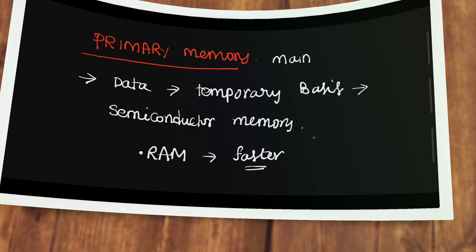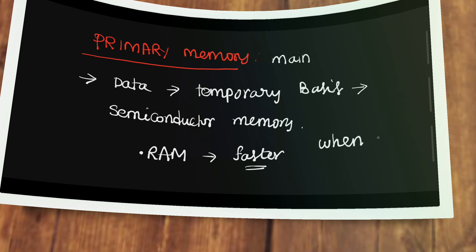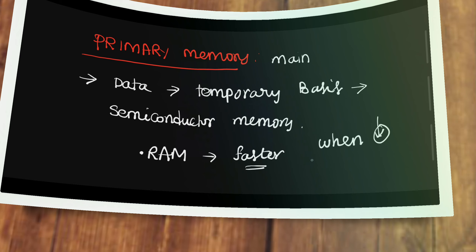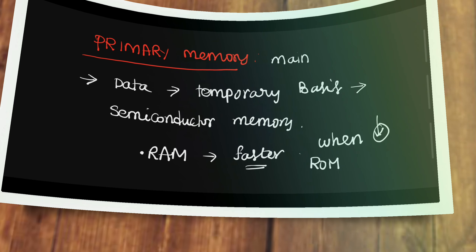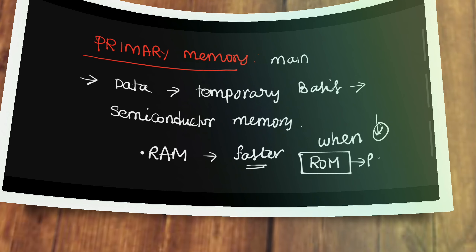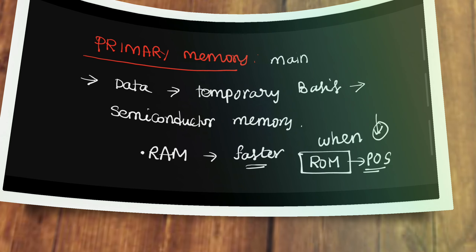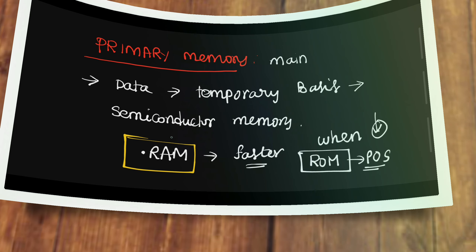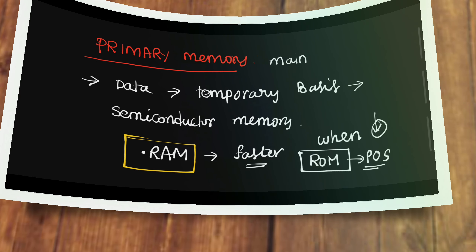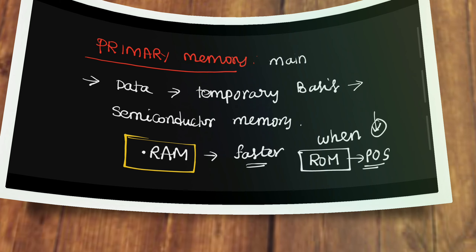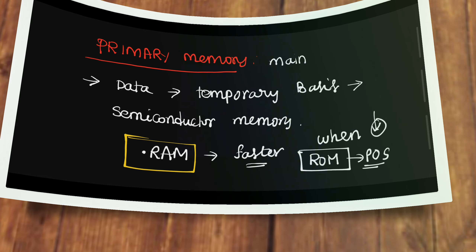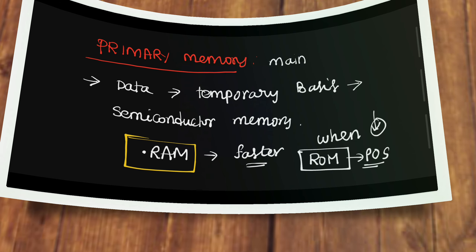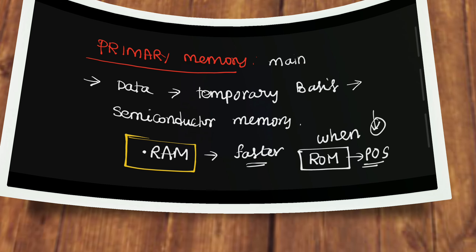For example, whenever you switch on a computer, first data stored in ROM is going to be activated, then a power self-test runs, after which data is stored into RAM. For example, you are sleeping and someone is calling to you — you have to be activated, then if someone is saying something to you, you are going to listen to the data. So the listening process is handled by RAM.